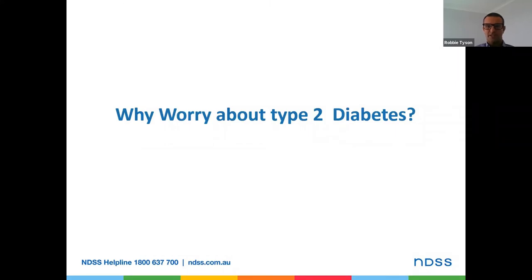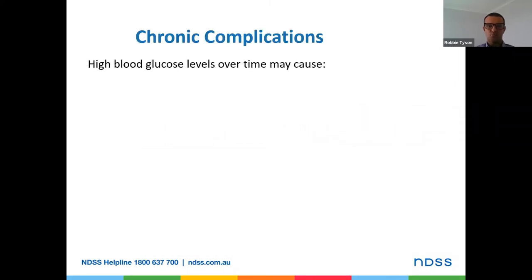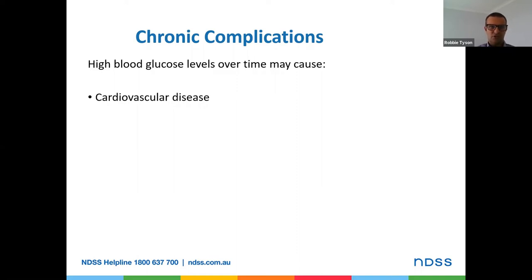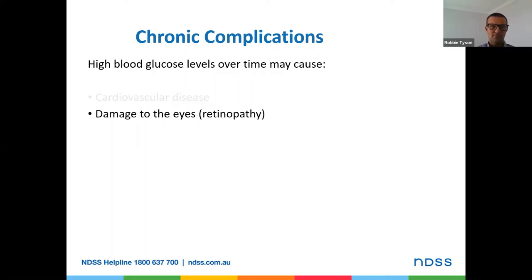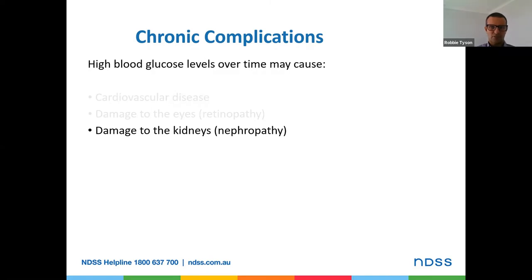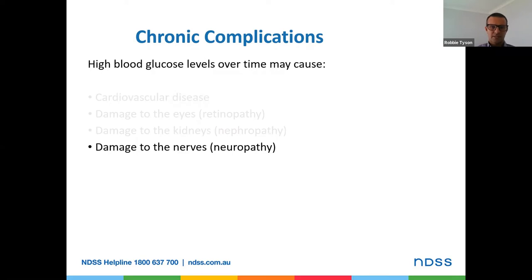Why worry about type 2 diabetes? Let's look at some complications — resulting not initially, but over time with elevated blood glucose levels. Cardiovascular disease: glucose in the blood damages the inside of blood vessels, leading to plaque buildup and increased risk. Damage to the eyes can lead to a longer-term complication called retinopathy. Small blood vessels in the kidneys can also be damaged — this is called nephropathy. Damage to the nerves in the feet is called neuropathy.